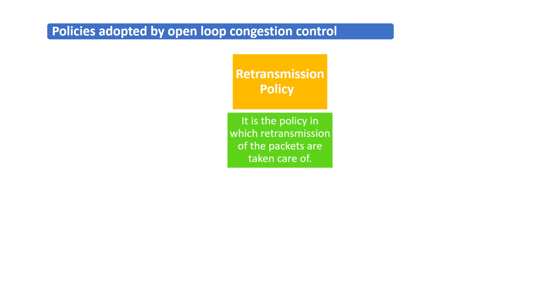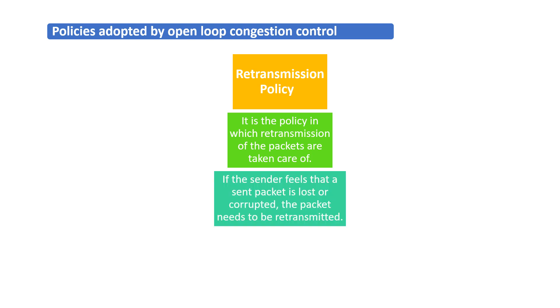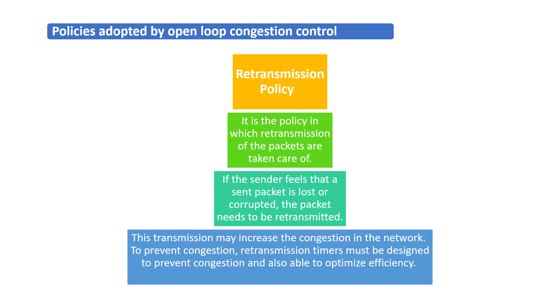The first policy is the retransmission policy. This policy is adopted in the retransmission of packets. If the sender feels that the sent packet in the network is lost or corrupted, that particular packet needs to be retransmitted. This retransmission of packets may increase the congestion in the network. To prevent such congestion, this retransmission policy is adopted where retransmission timers are designed to optimize efficiency and prevent congestion.